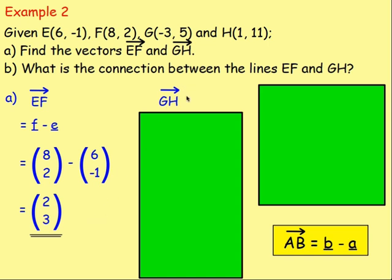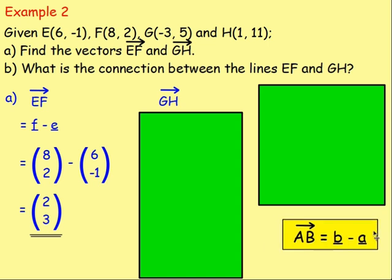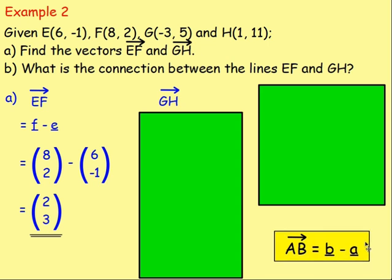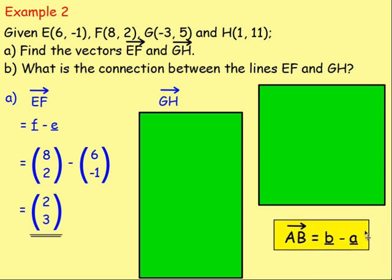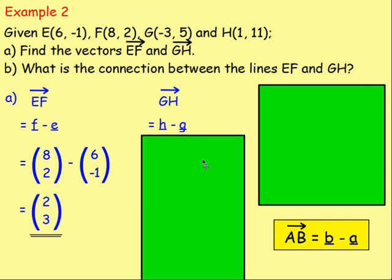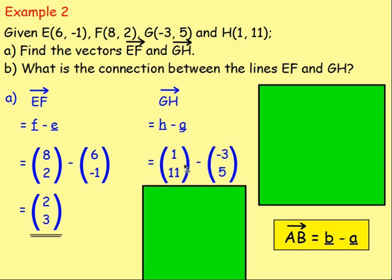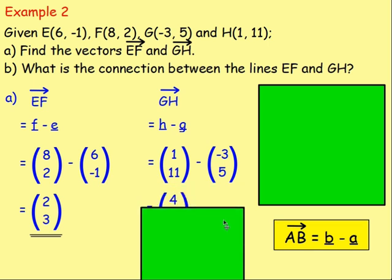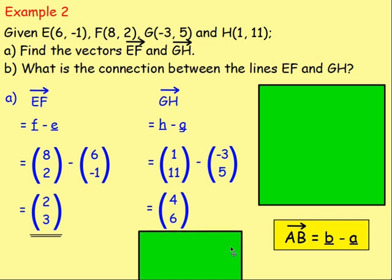Let's do GH. So for GH, how do we do that? Well done. You are pointing to this box. For GH, we would have H take away G. Second take away the first. So the components of H would be, because this is the point 1, 11, we would have 1, 11 written as a column. Remember the x on the top, y on the bottom. We are taking away G. So we are taking away negative 3, 5. If we work that out, 1 take away negative 3 gives you 4. And if you work out 11 take away 5, that would be 6.